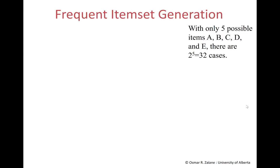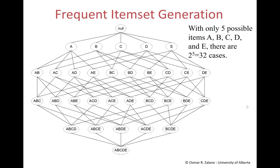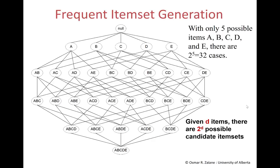This is called frequent item set generation. You have not just the unique items, but all the possible pairs — AB, AC, AD, and so on — and then all the possible triplets, etc. In general, if you have D different items in your store, you would have 2 to the D candidates to count. D is the dimensionality of the problem. With 100,000 items in a store, not a rare case, we would have 2 to the 100,000 counters to count, which is intractable, at least not in a reasonable time with today's computers.